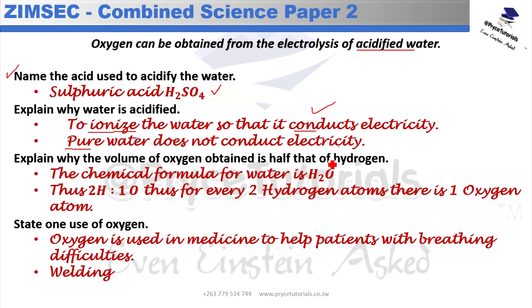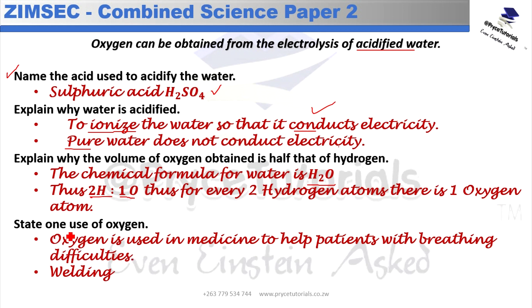To explain why the volume of oxygen obtained is half that of hydrogen, think of the chemical formula of water: H₂O. For every two hydrogen atoms there is one oxygen atom. So from the electrolysis, for every two volumes of hydrogen produced you get one volume of oxygen.